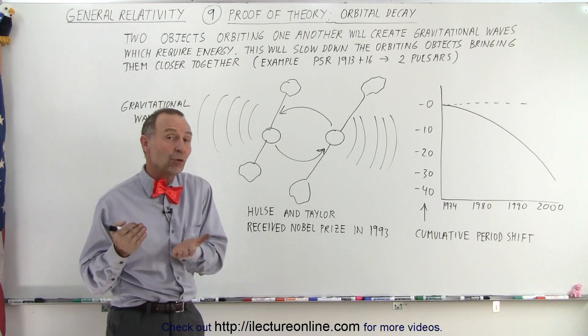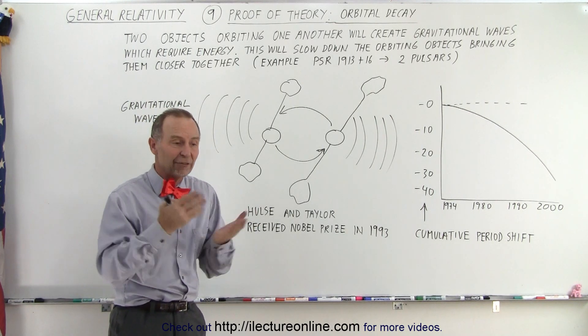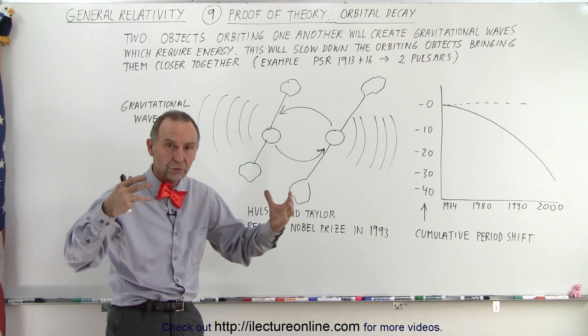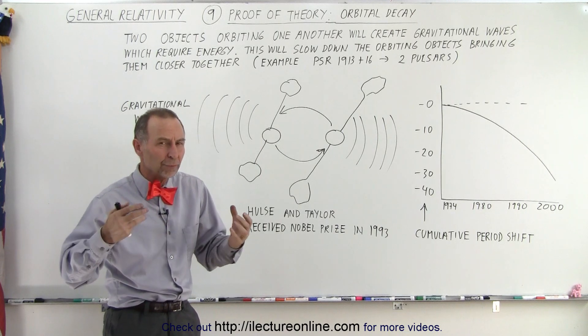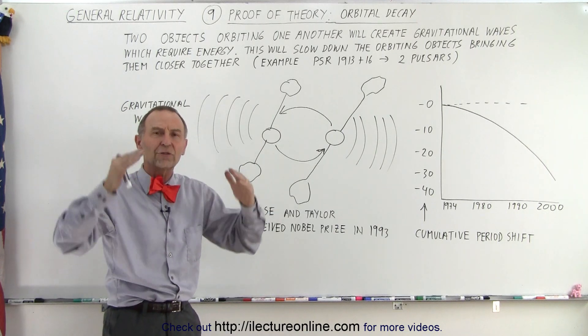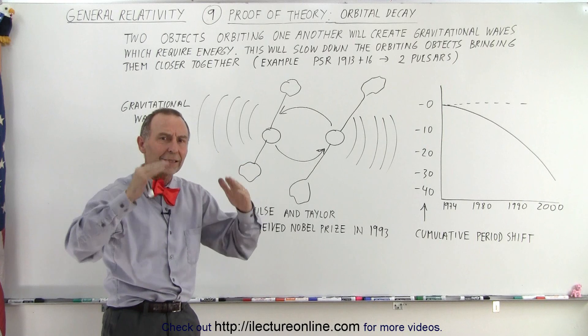Einstein predicted that gravitational waves had to exist. If space was curved, an object moved very rapidly, very massive objects moved very rapidly through space, this should then cause that curvature of space to undulate like that.